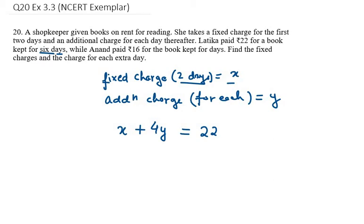Now, Anand paid 16 rupees for a book kept for four days. Two days go into the fixed charge (x), and the remaining two days are additional charges (2y). So it will be x + 2y = 16. This is equation number two.